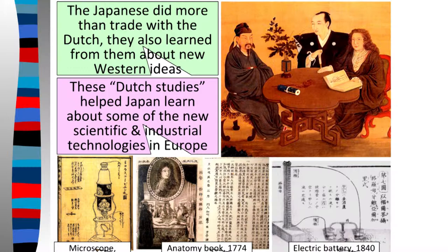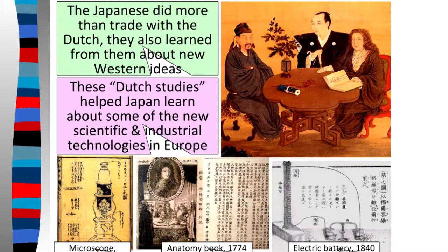In the early 1800s, Britain, France, Russia, and the US really tried to negotiate trade rights in Japan. But Japan kept saying no — they didn't want to end up like China, where they'd been gotten addicted to drugs and split up. Japan wanted to just stay itself and not get involved in anyone else's drama.